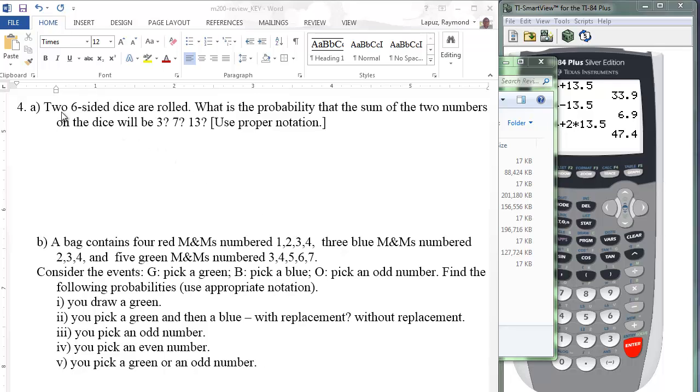Problem number four. Two six-sided dice are rolled. What's the probability the sum of two numbers on the dice will be three or seven or thirteen?